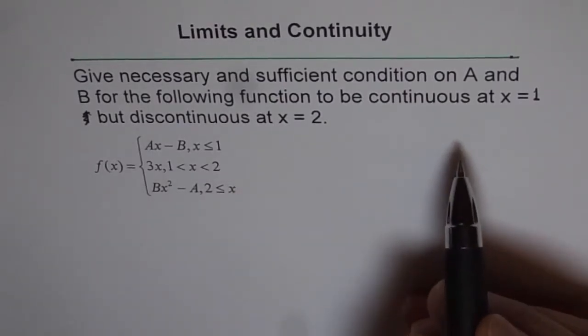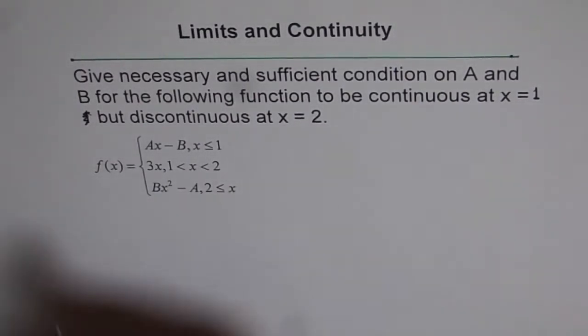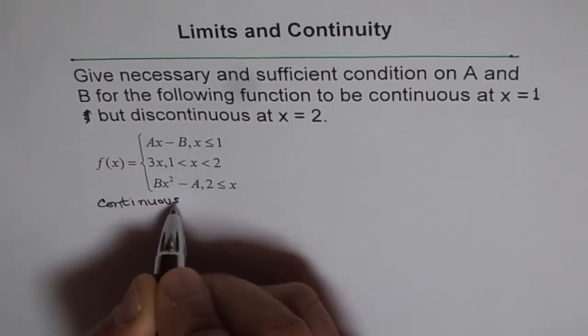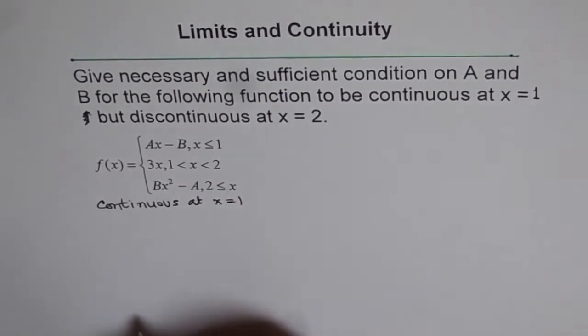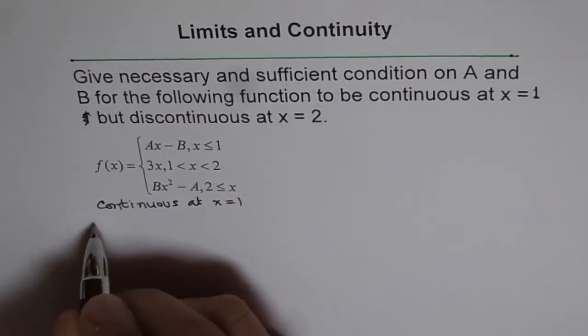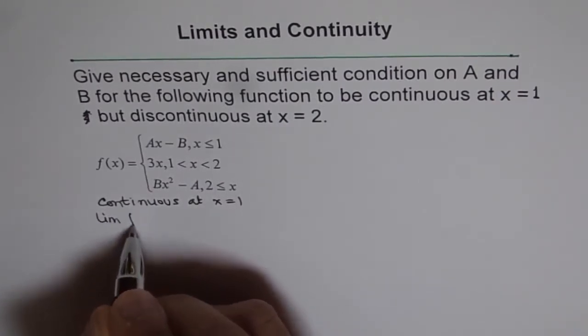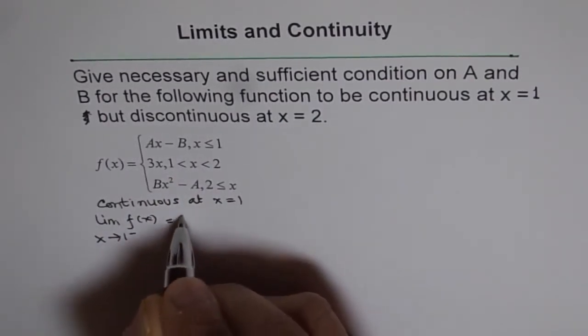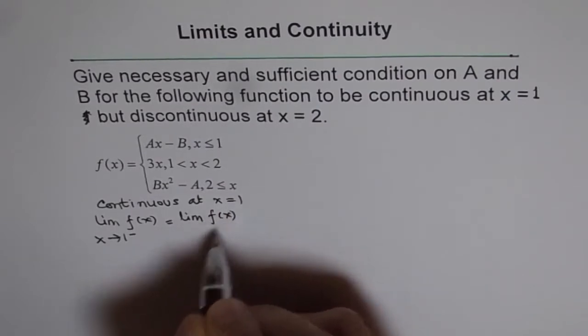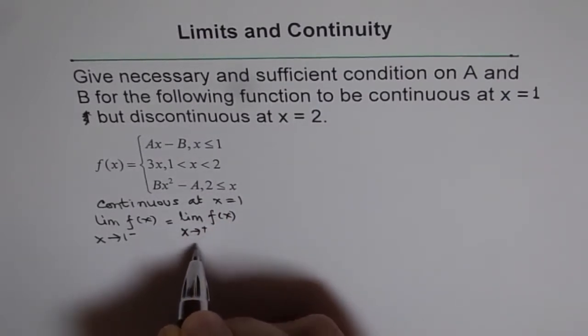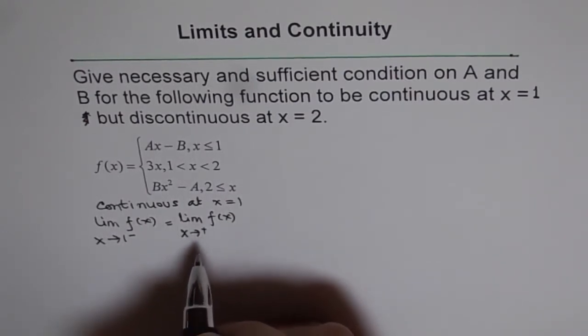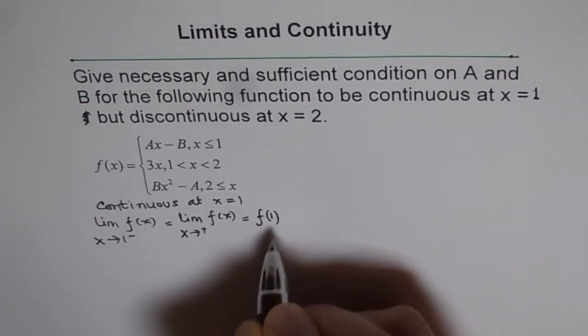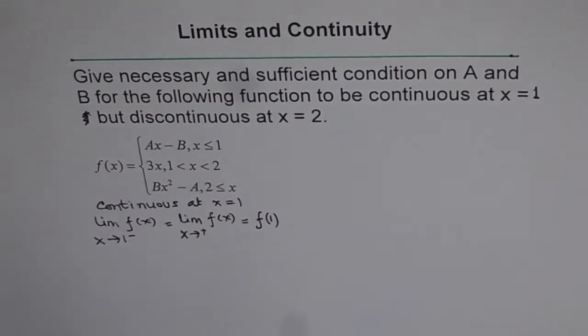Now the first condition is that this function has to be continuous at x equals to 1. So when we say continuous at x equals to 1, that means the limit of the function as x approaches 1 from the negative side should equal the limit as x approaches 1 from the positive side. So that means the limit exists. And for the function to be continuous, this should also equal the value of the function at 1.